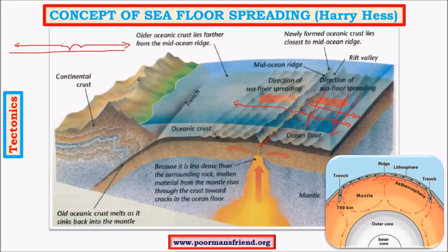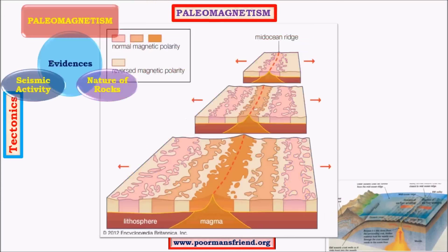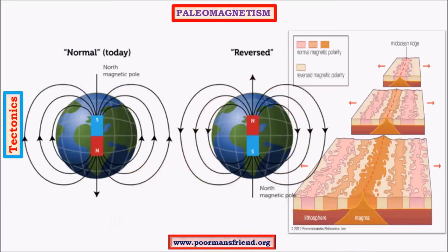Sea floor spreading theory is an extension of continental convection current theory, with additions of nature of rocks, paleomagnetism, and related concepts like seismic activity. Paleomagnetism is a concept which depends on earth's magnetic field. Due to movement of magma near the core, a magnetic field is created with polarity — a north pole and south pole. Magnetic field lines originate at the north pole and are absorbed by the south pole.